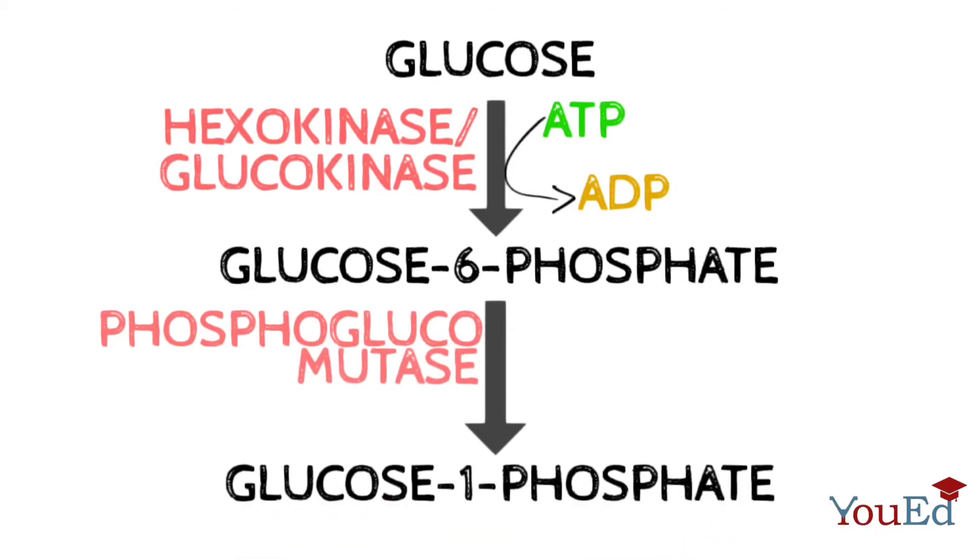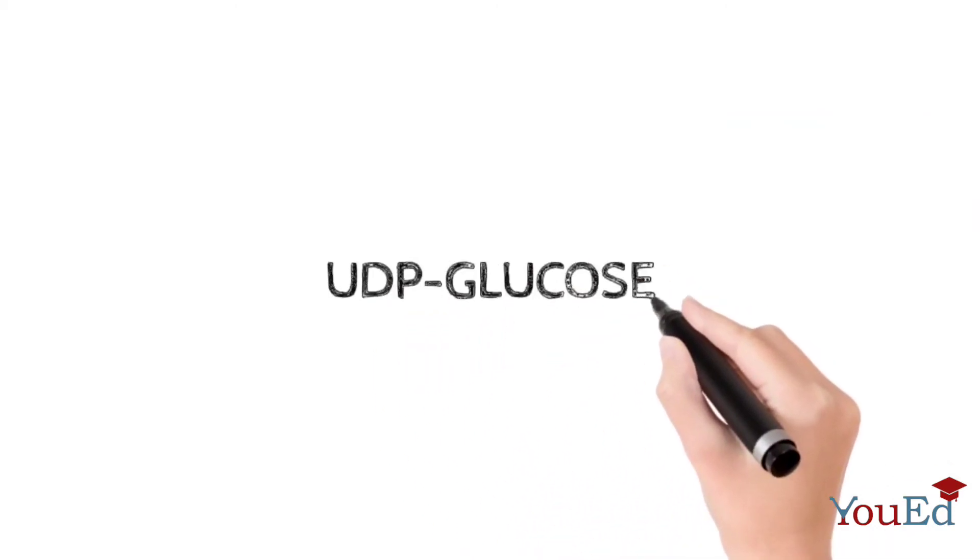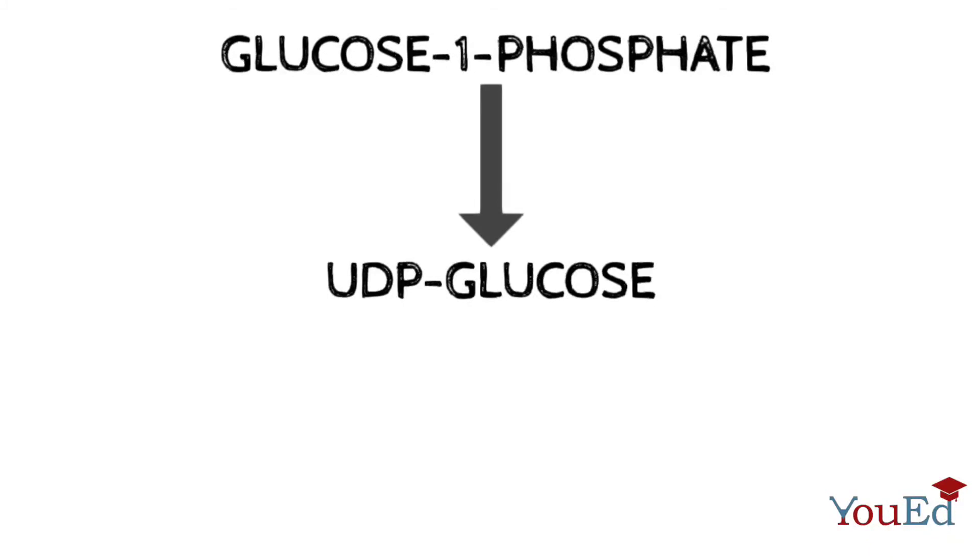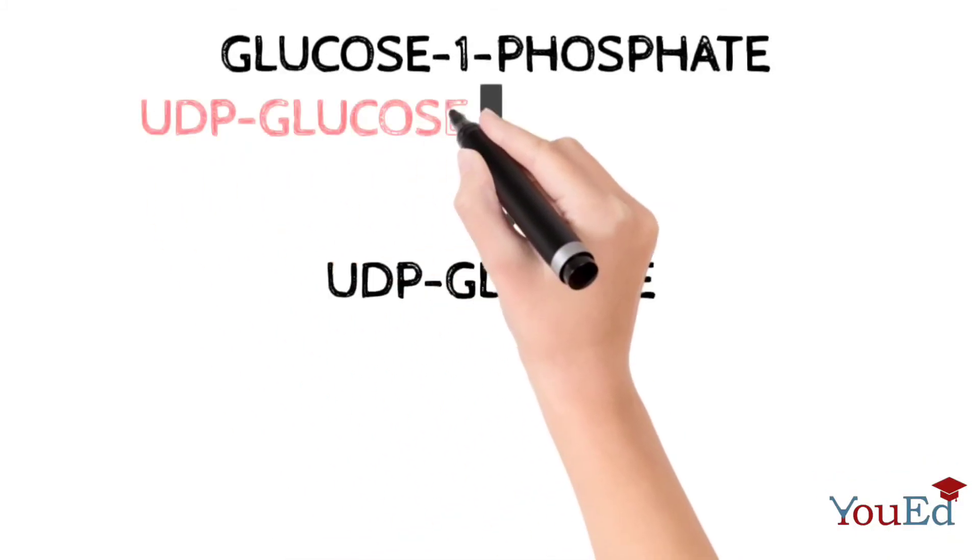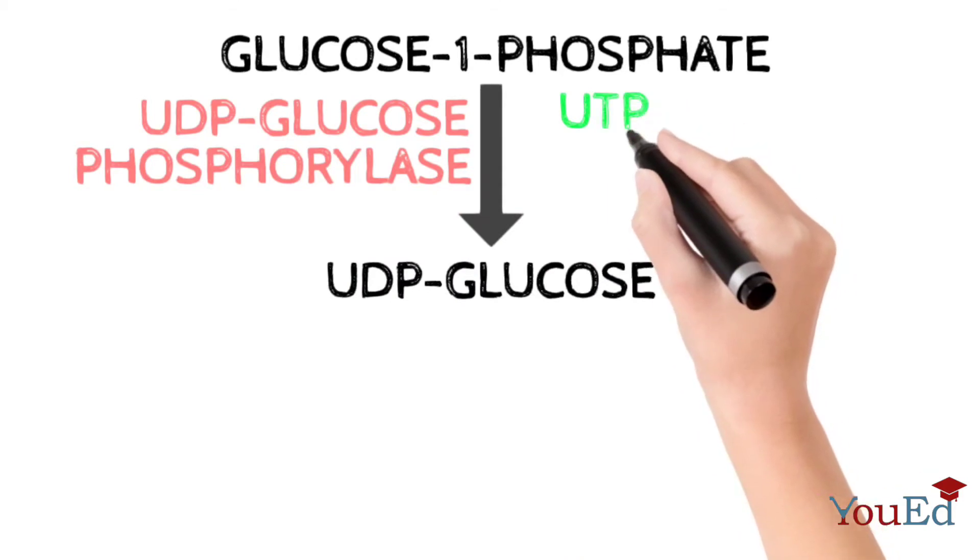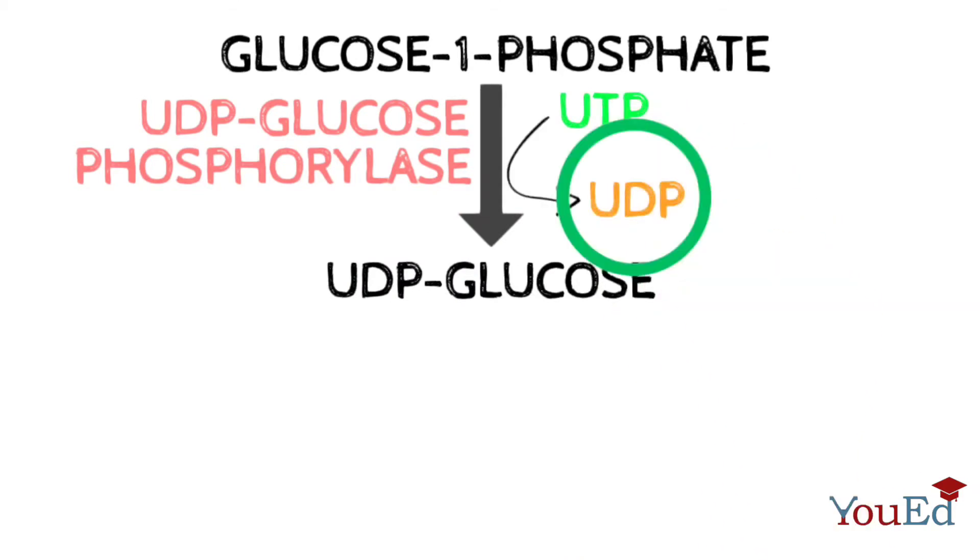UDP-glucose is then formed from glucose-1-phosphate, and the enzyme which catalyzes this reaction is called UDP-glucose phosphorylase. A molecule of UTP is utilized in this step. Glucose attaches to this UDP molecule to form UDP-glucose.